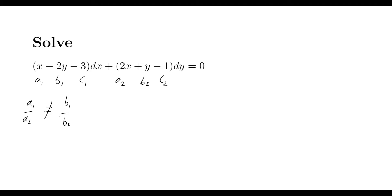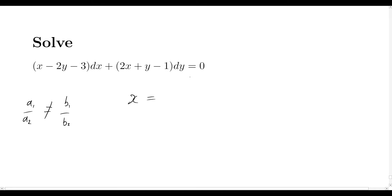Since the ratios are not equal, that locks in the method we'll use to approach this problem. We'll use a change of variable: we say x = X + h and y = Y + k.